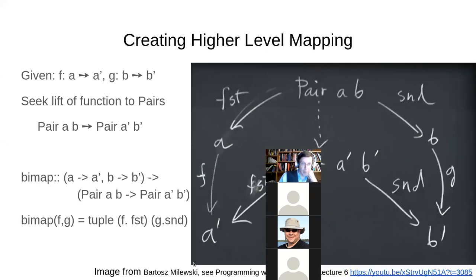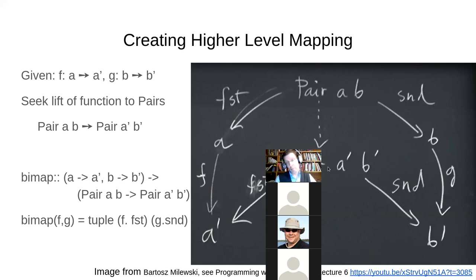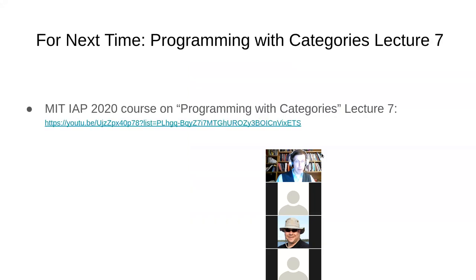He also noted that given this, you can define a mapping associated with a bifunctor — going from pair (A, B) to pair (A', B'), lifting two functions simultaneously: one going A to A' and one going B to B', to go from pair (A, B) to pair (A', B').